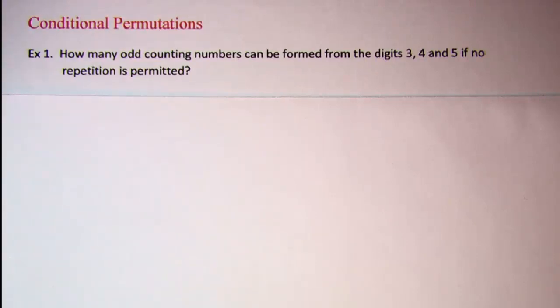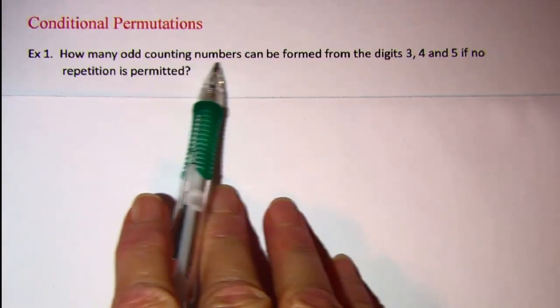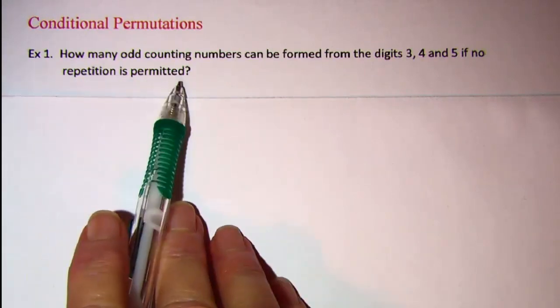In this video we'll be talking about conditional permutations. Our first example is how many odd counting numbers can be formed from the digits 3, 4, and 5 if no repetition is permitted.